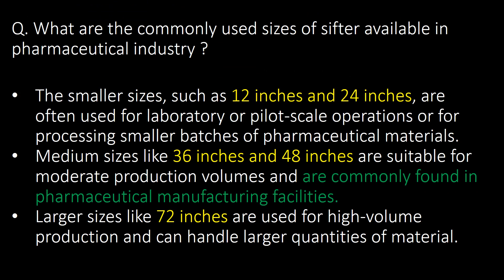What are the commonly used sizes of shifters available in the pharmaceutical industry? Smaller sizes such as 12 inches and 24 inches are often used for laboratory or pilot-scale operations. Medium sizes like 36 inches and 48 inches are suitable for moderate production volumes. Larger sizes like 72 inches are used for high-volume production and can handle larger quantities of material.